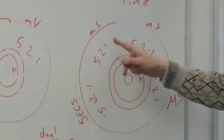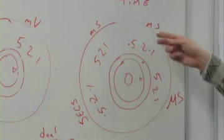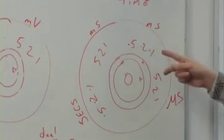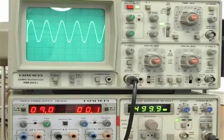Then we go on to 5 milliseconds, 2, 1. Here we're in 0.2 and 0.1 milliseconds, and down here microseconds.